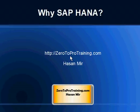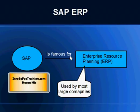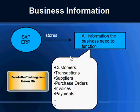Hello, the topic for this video is 'Why SAP HANA.' This is Hassan Mir from zerototoprotraining.com. SAP company, also known as SAP AG, is famous for its ERP software. ERP stands for Enterprise Resource Planning software, and it is used by most large companies.